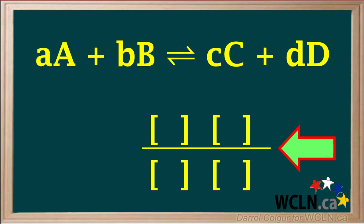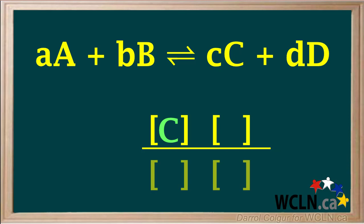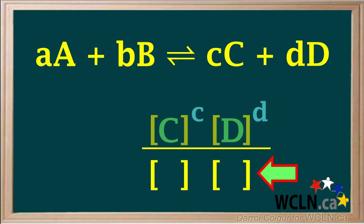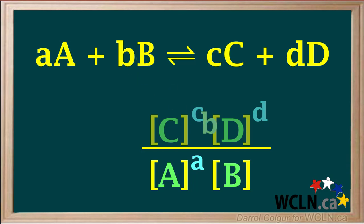We'll write an expression below the equation. In the numerator of this expression, we'll insert the concentration of product C times the concentration of product D. The coefficient c in the equation becomes the exponent for the concentration of substance C, and the coefficient d becomes the exponent for the concentration of substance D. So the coefficients in the equilibrium equation become exponents in this expression. In the denominator, we insert the concentration of reactant A and multiply it by the concentration of reactant B. The coefficient a becomes the exponent of the concentration of substance A, and the coefficient b becomes the exponent of the concentration of substance B.